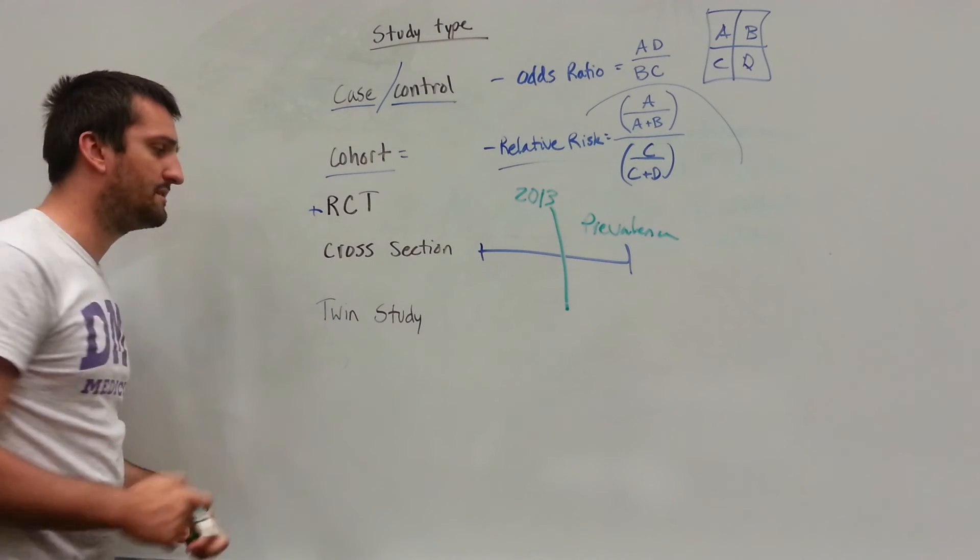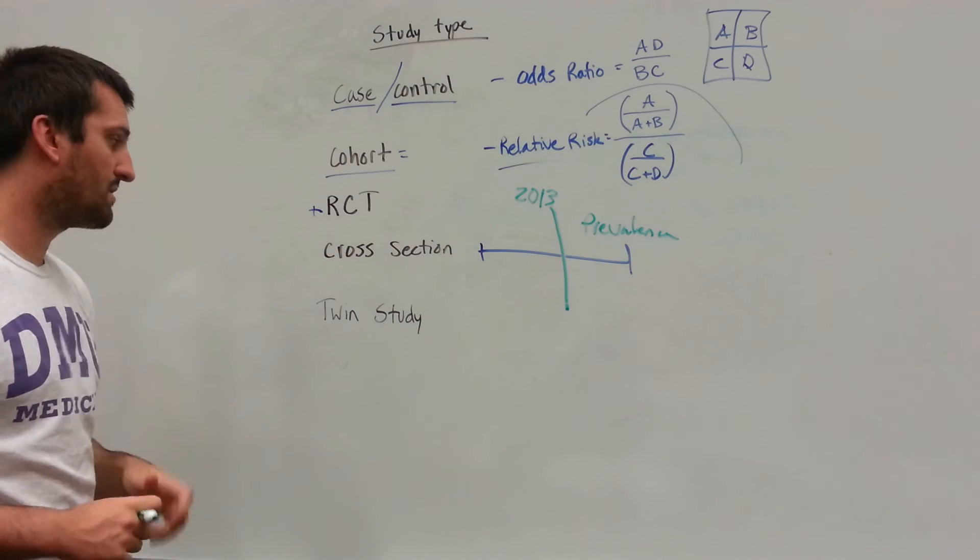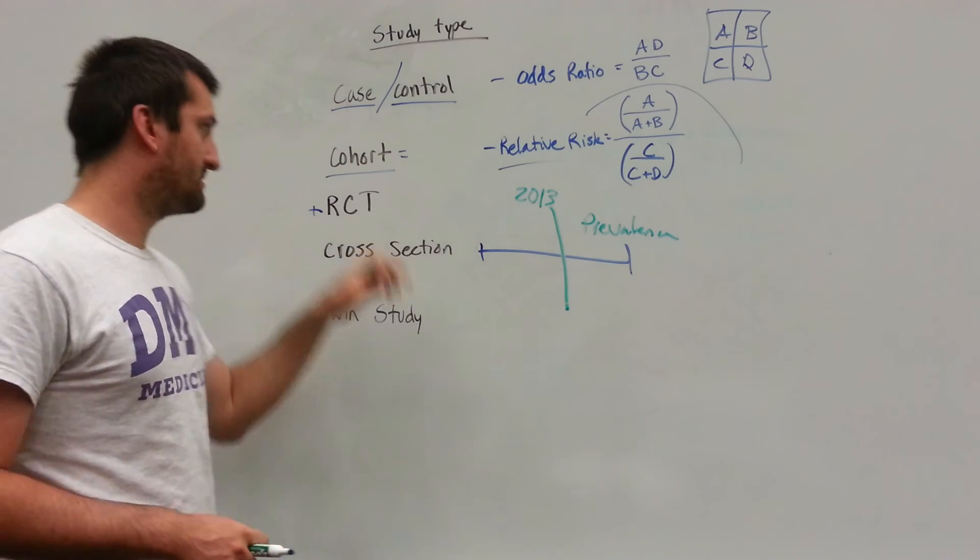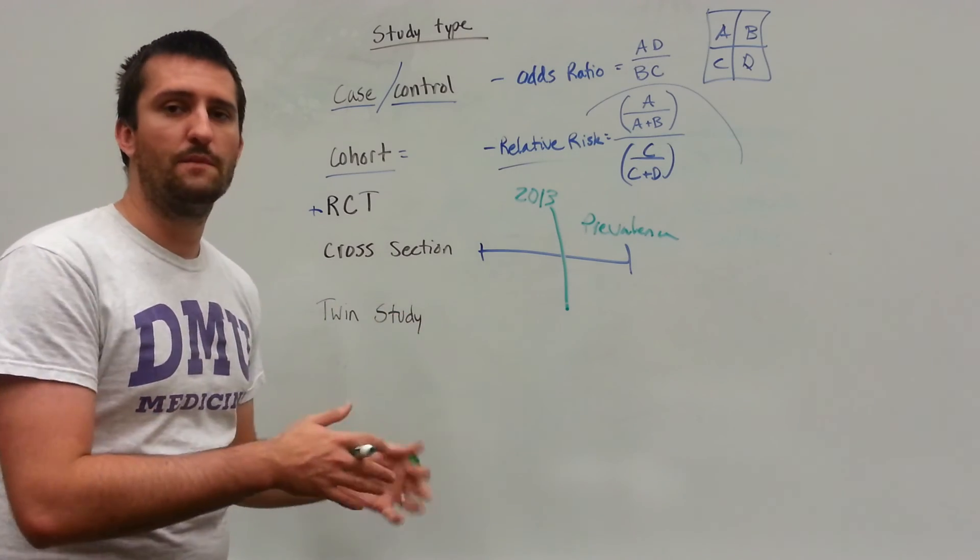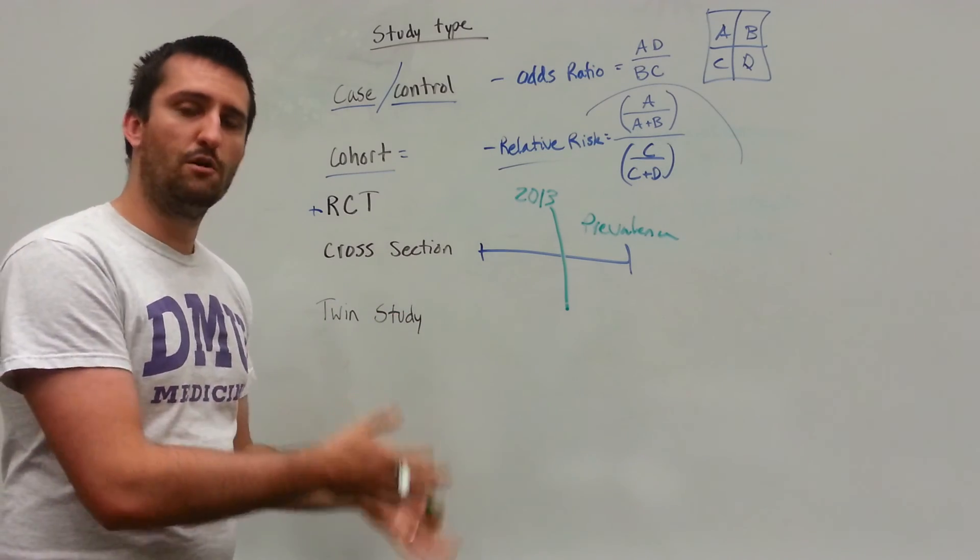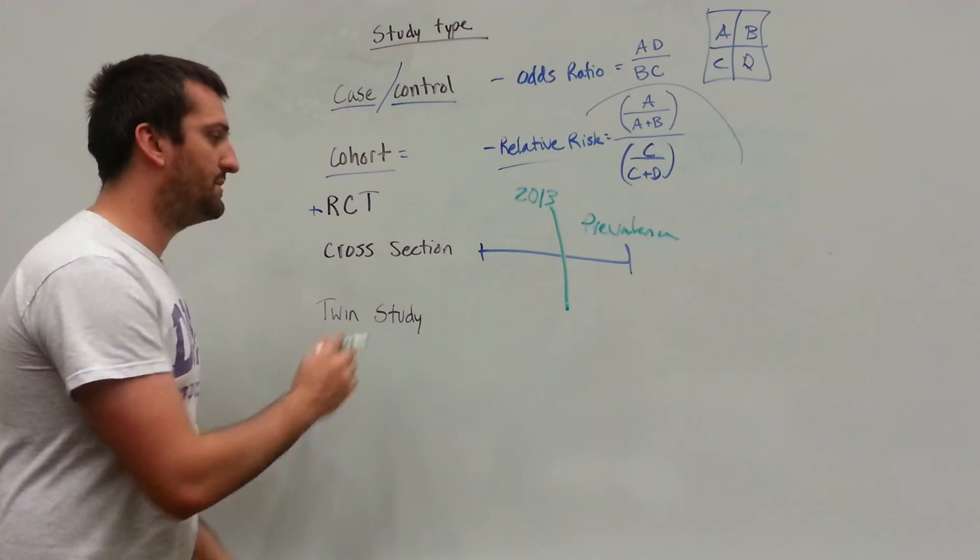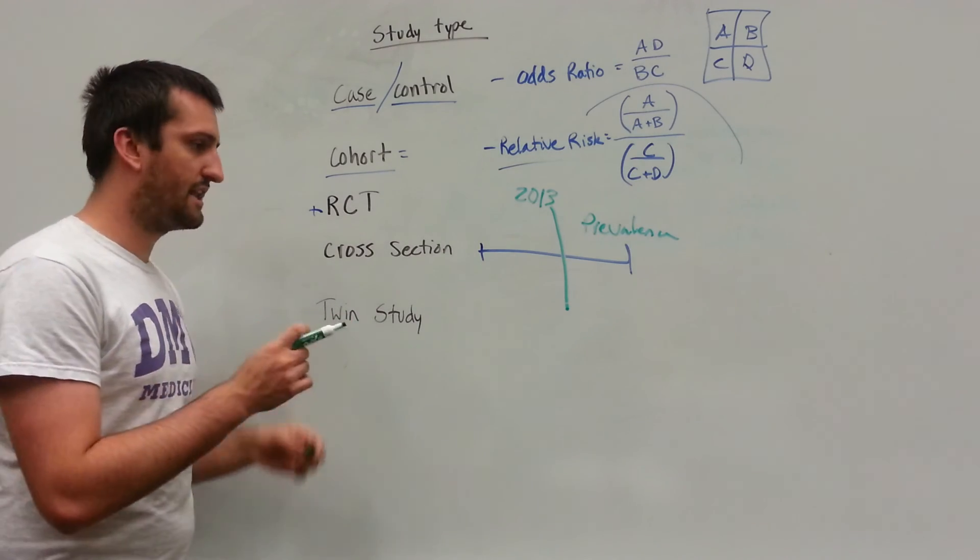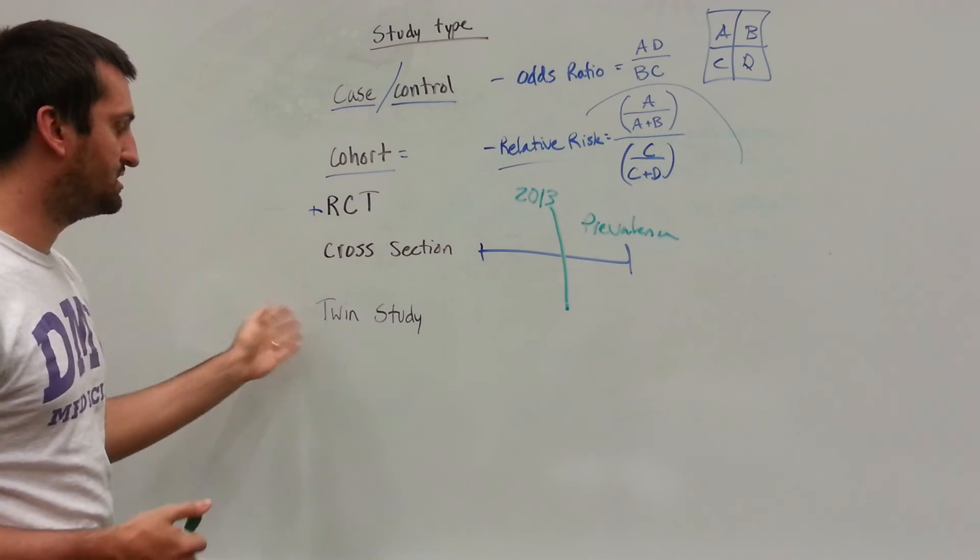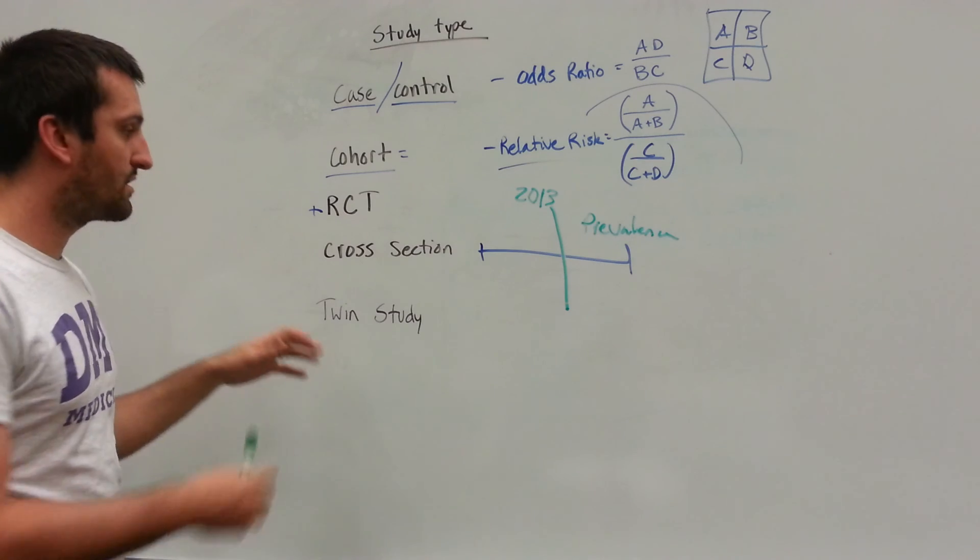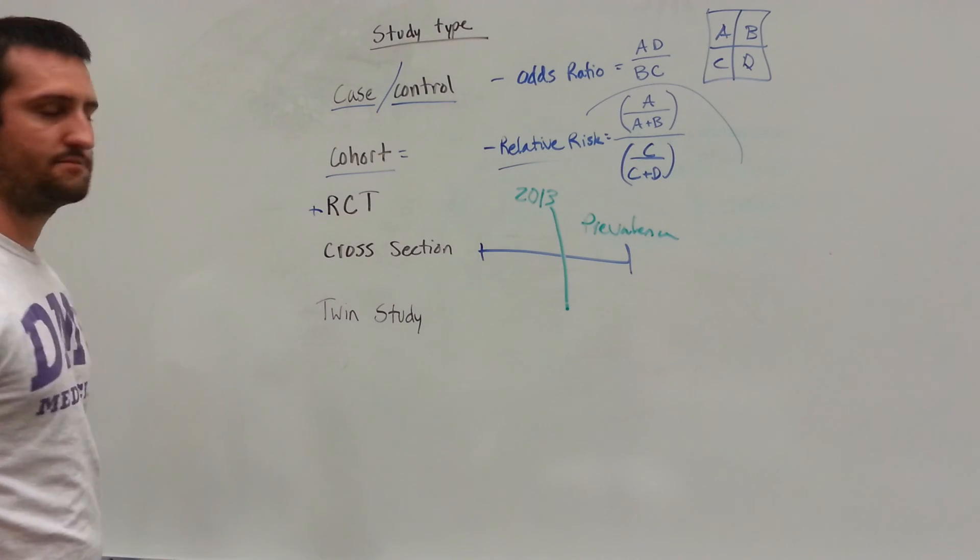And then lastly, a twin study. It's interesting and they are performed, just not as much. These are going to be your main ones. Twin studies, you're going to have two different twins. You may expose them or check out the exposure of one to the other and how they're going to differ. Really, it's going to be dealing with the genetic makeup of the patient. So since identical twins will be genetically the same, we're going to see how genetics factors in. So that's the difference between these types of studies.